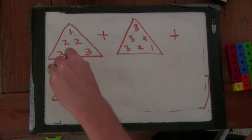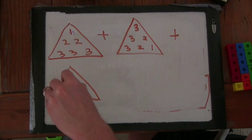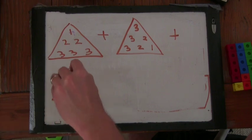And then we'll add in another triangle here, where the one is rotated over here, so it's going to go one, two, two, three, three, three.